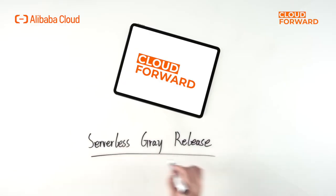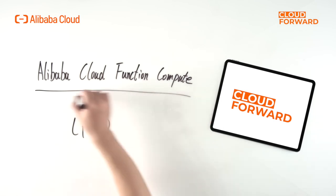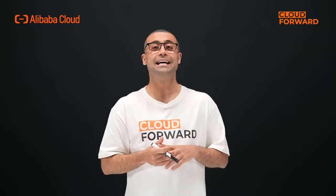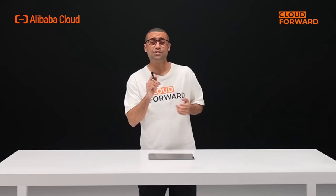Next, let's take a look at serverless gray release. Taking Alibaba Cloud Function Compute as an example, let's introduce the process and two methods of gray release. Serverless gray release is implemented through configuring aliases. Aliases can be configured to specify the traffic ratio for gray and main versions. When calling a function, use the configured alias to send traffic to the corresponding version according to the ratio.